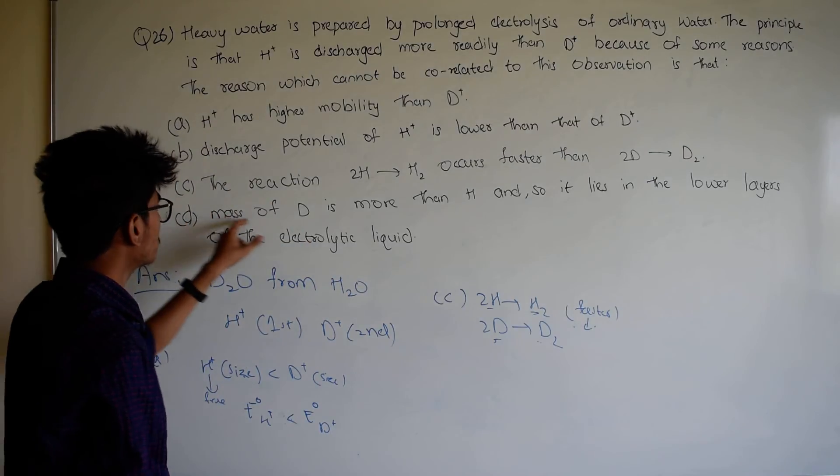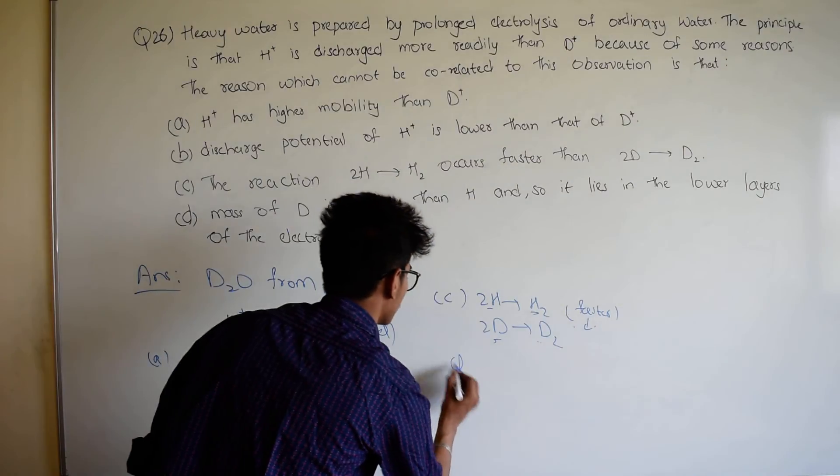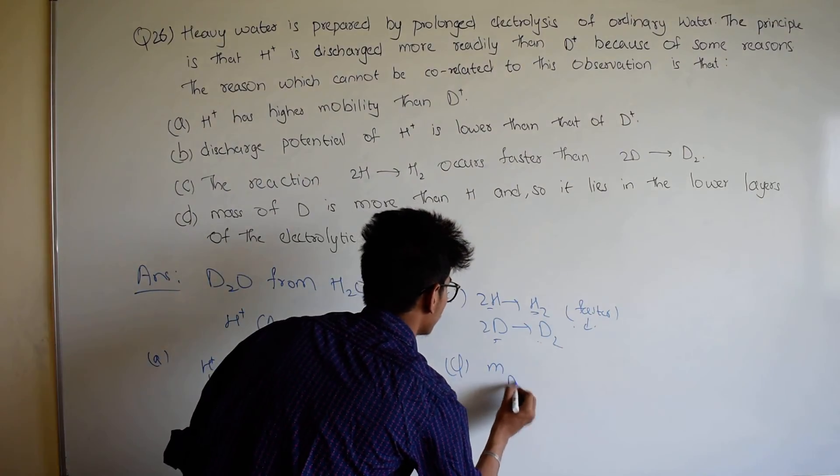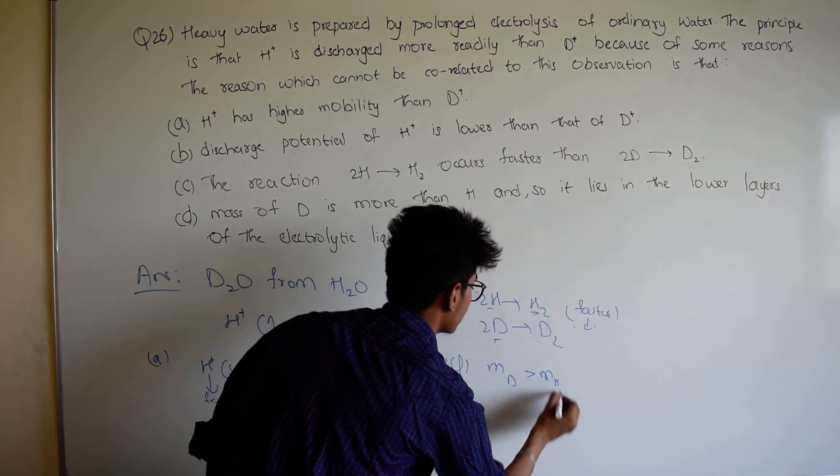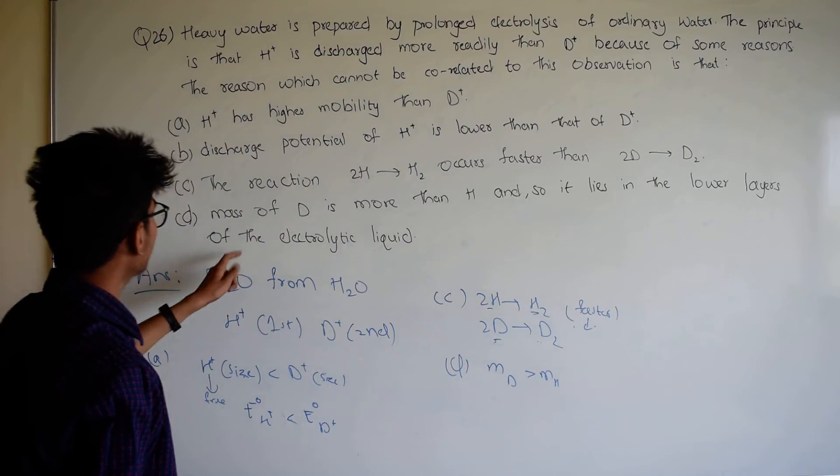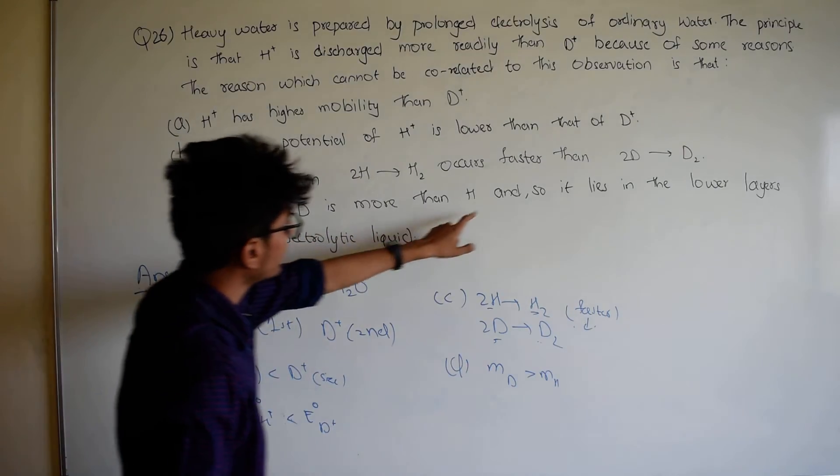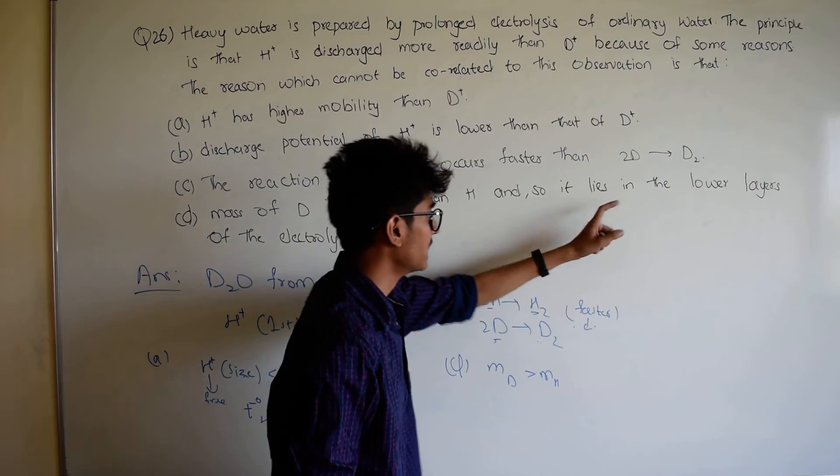D option: mass of D is more than 2D. D option: mass of D is greater than mass of H. This is correct. Because what I am talking about, mass of D is more than H. And so it lies in the lower layers.